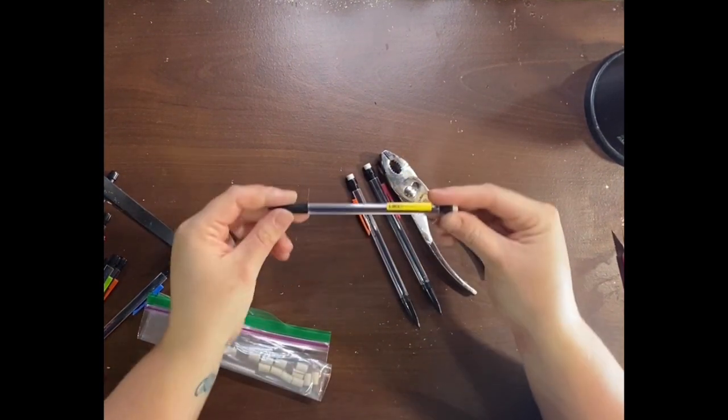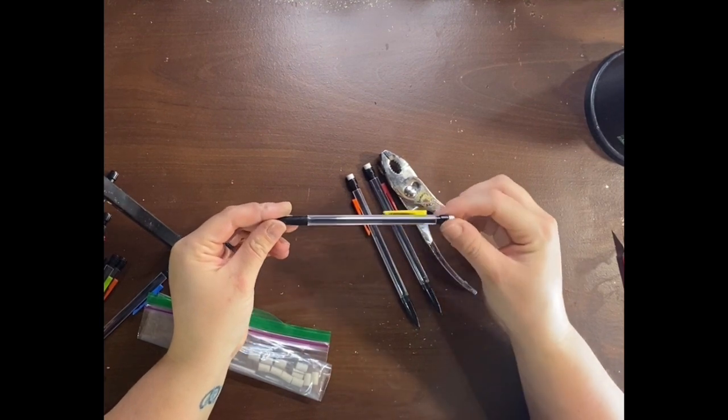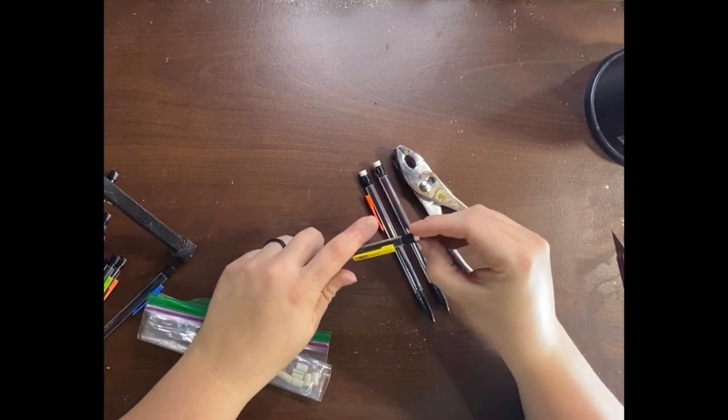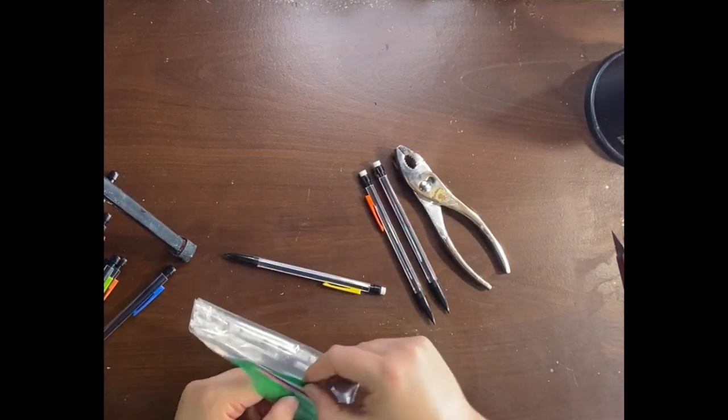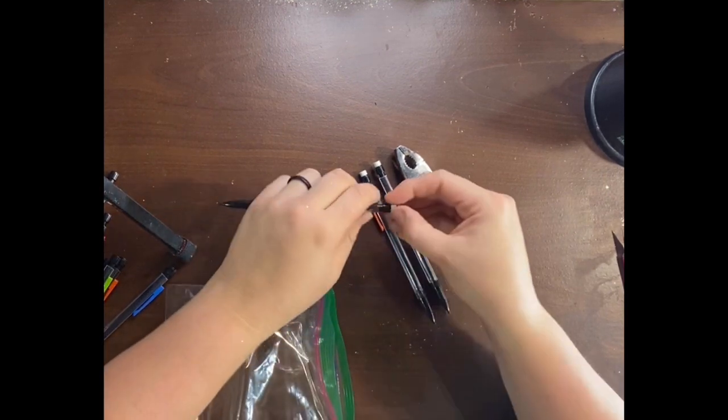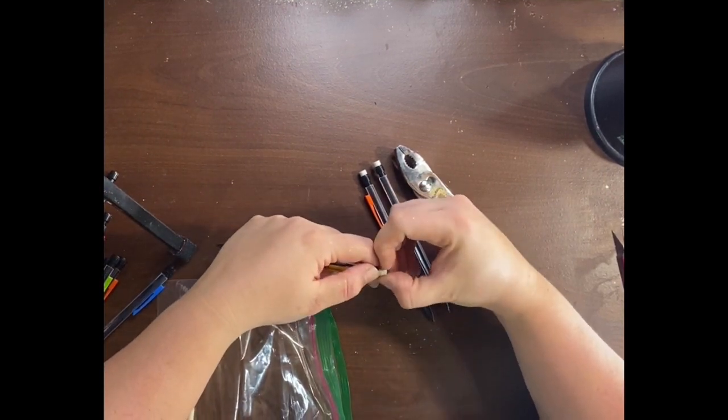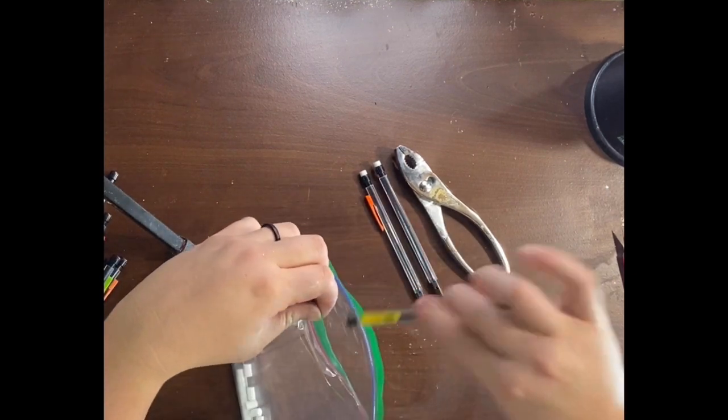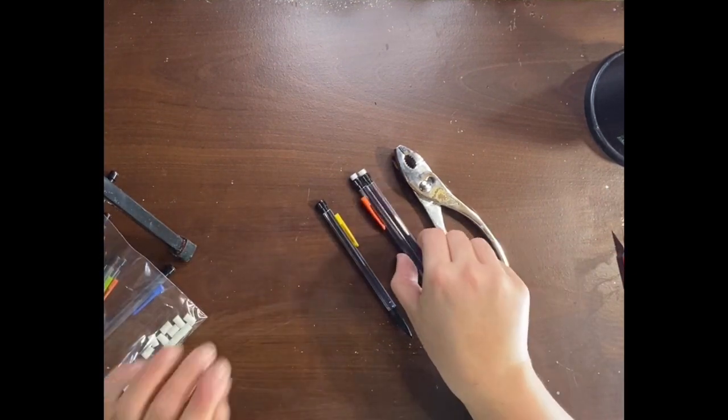So what you're going to start off is you're going to have to remove the clip exactly how you did the pens. Remove the eraser, remove any lead that comes in the pencil, and then place it somewhere for safekeeping until the end when you need it back.